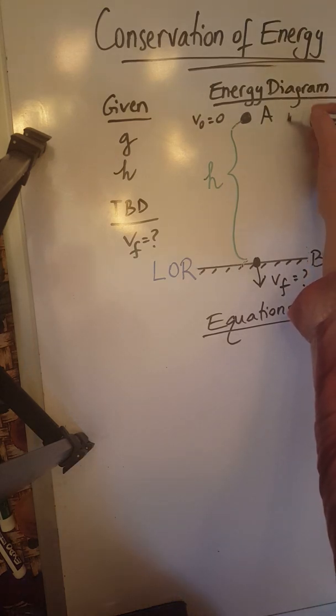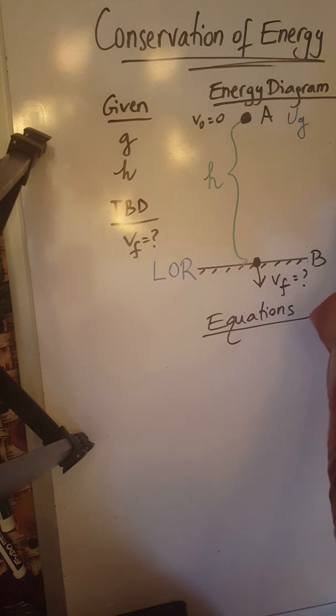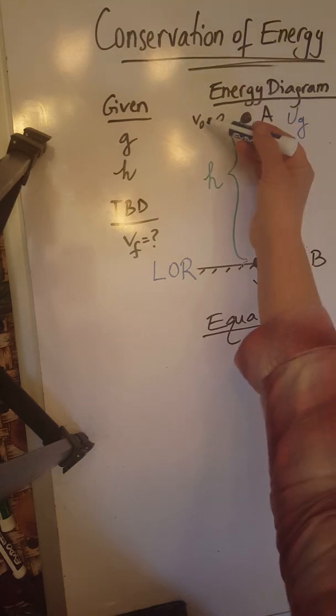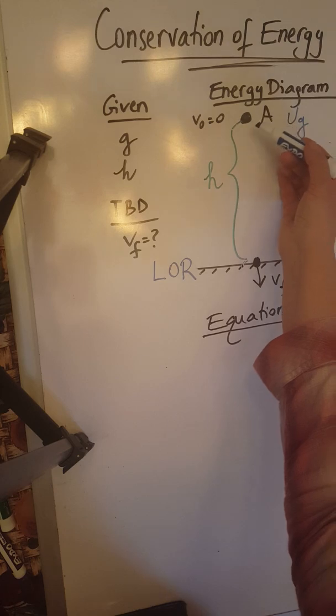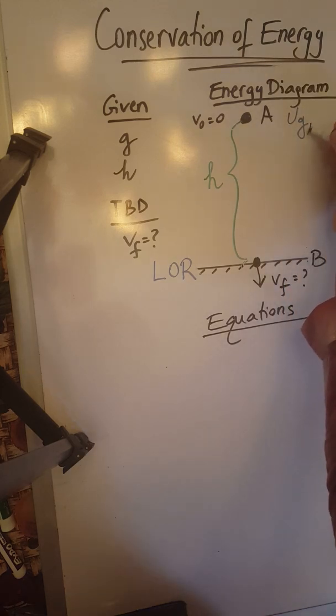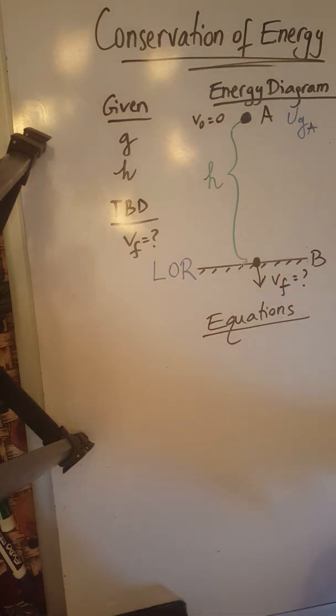So what we have here is only potential energy. I'm going to show that with a symbol for gravitational potential energy UG. And because the object is at rest there will not be kinetic energy. So at point A we only have potential energy.